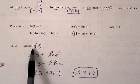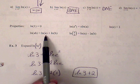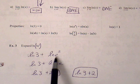Example 3, expand natural log of 3E squared. So if we expand, we can use, in this case, product property, so LN of 3 plus LN of E squared.